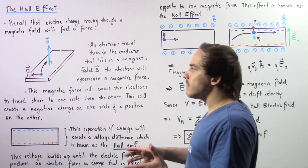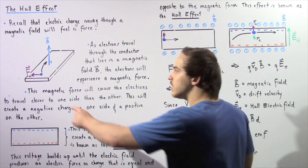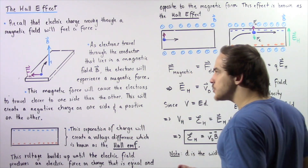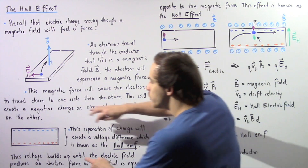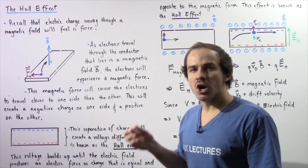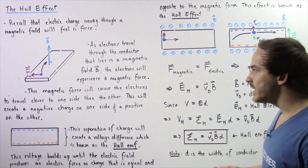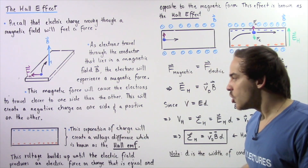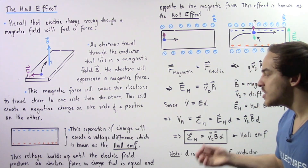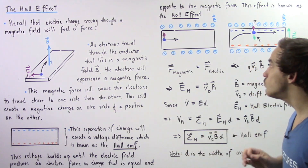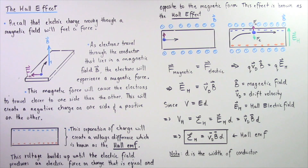We now have a separation of electric charge as a result of this magnetic force. This separation of electric charge will in turn create a voltage difference between our two sides of our conductor, and this voltage difference is known as the Hall EMF, where EMF stands for electromotive force — simply another word for voltage. This voltage will continue to build up until the electric field produces an electric force on the moving charge that is equal and opposite to the magnetic force. This effect is known as the Hall effect.